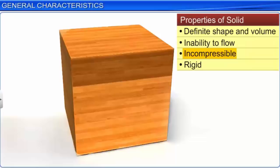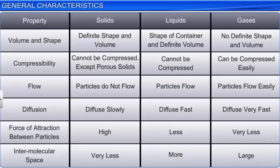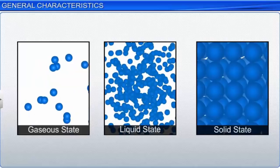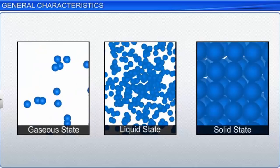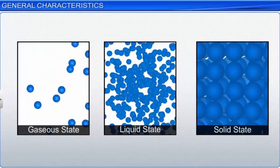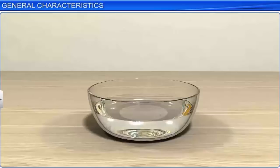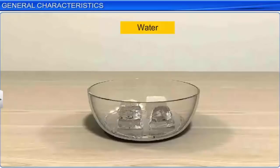In general, the distinct properties of the three different states can be attributed to the arrangement of the constituent particles. Any change in the arrangement of these constituent particles changes the physical state of a substance. The arrangement depends upon external conditions of temperature and pressure. For example, at one atmospheric pressure, water in liquid state gets converted into its solid form, ice, at 0 degrees Celsius or 273 Kelvin.